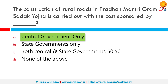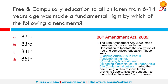Free and compulsory education to all children from 6 to 14 years of age was made a fundamental right by which amendment? As you can tell by the image on the right, the correct answer is the 86th Amendment. It states that the state shall provide free and compulsory education to all children of the age 6 to 14 years in such manner as the state may by law determine.